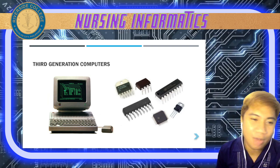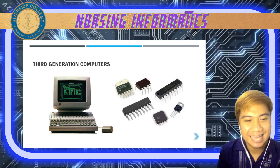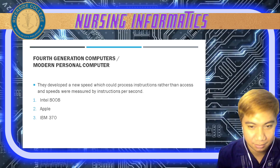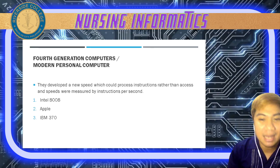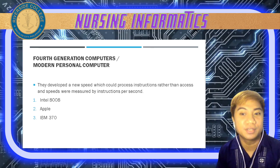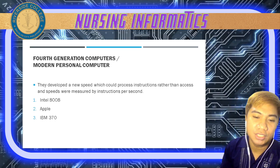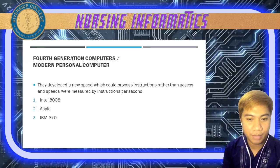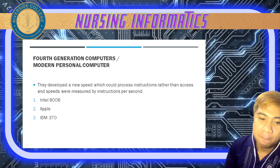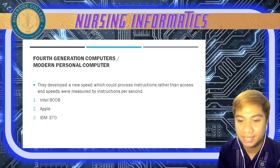Next we have fourth generation or modern personal computers — what we call the PC. They developed new speeds that could process instructions, and speeds were measured by instructions per second. Examples include the Intel 8008, Apple computers, and the IBM 370, which was the first mainframe that had printed circuits.